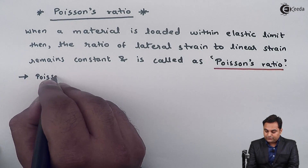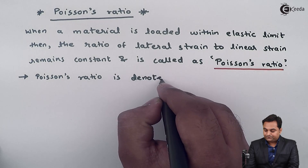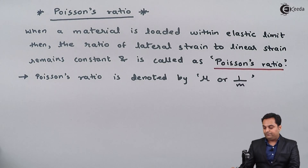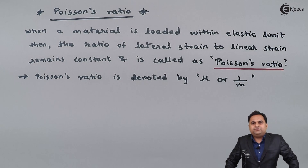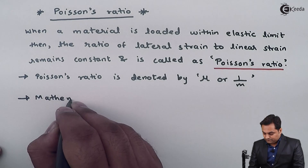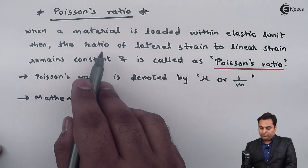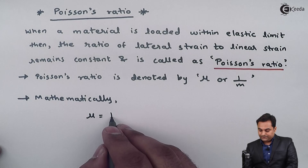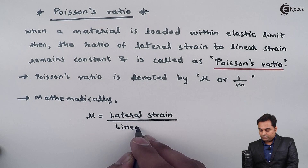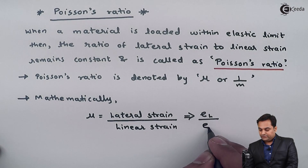Next, Poisson's ratio is denoted by mu, or it is denoted by 1 upon m — these are the notations for Poisson's ratio. Next, I can write the formula mathematically: Poisson's ratio mu equals the ratio of lateral strain to linear strain. Lateral strain is denoted by e suffix l, and linear strain is denoted by e.